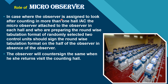In case where the observer is assigned to look after counting in more than one hall or AC, the Micro-Observer attached to the observer in each hall, who are preparing the round-wise tabulation format of randomly selected two control units, should sign the round-wise tabulation format on behalf of the observer in absence of the observer. The observer will countersign the same when he or she returns to visit the counting hall.